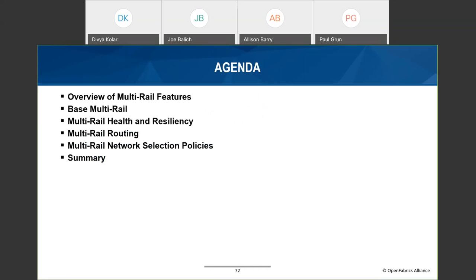In this presentation I'll cover the multi-rail feature set and describe the motivation and advantages it provides LNet. I'll start by giving a quick overview of LNet and why multi-rail represents a shift in how LNet works. Then I'll cover the different phases: the base multi-rail feature, health and resiliency, improved LNet routing infrastructure, and finally network selection policies which give the administrator finer-grain control over LNet traffic.